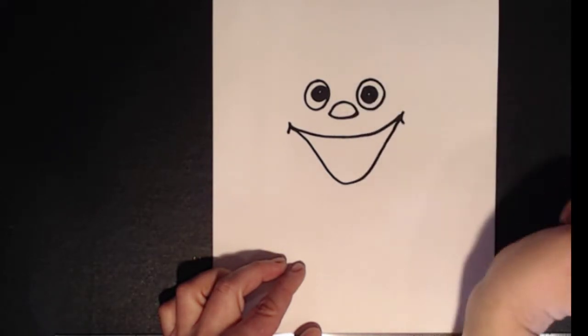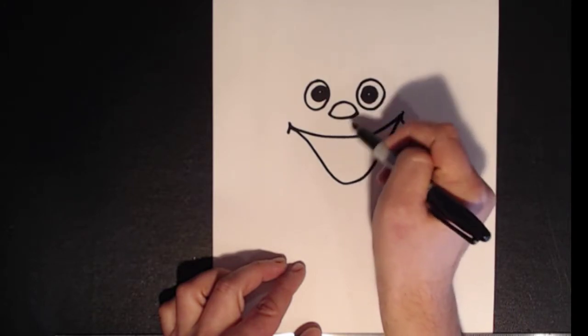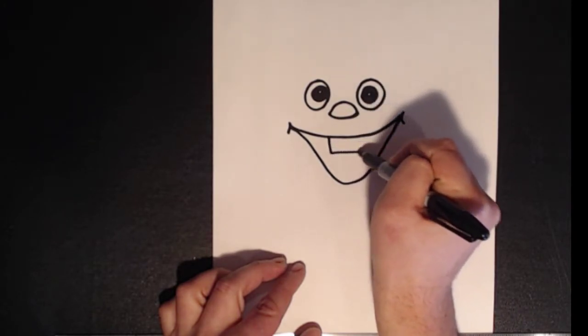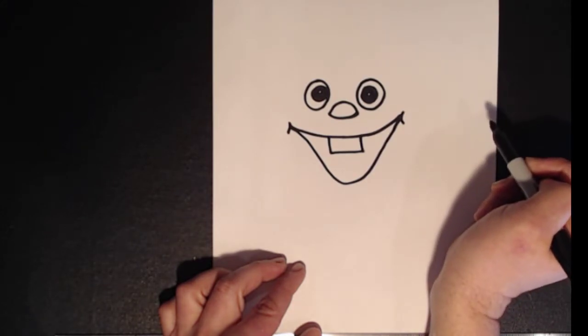One of the big things about Olaf is his buck tooth. And his buck tooth is going to be the same width as his nose. Okay, there we go.